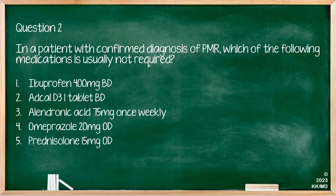In a patient with a confirmed diagnosis of PMR, which of the following medications is not usually required? Options are ibuprofen, Adcal D3, alendronic acid, omeprazole, and prednisolone. Prednisolone is the mainstay of treatment, with other medications given alongside it given the long duration of treatment. Therefore ibuprofen is the correct answer — patients should not typically require additional strong pain relief, as the steroids should settle symptoms. If they don't, look for a PMR mimic such as severe infections or malignancies including myeloma.